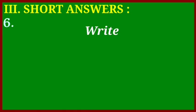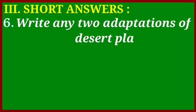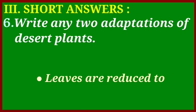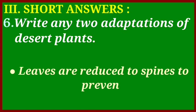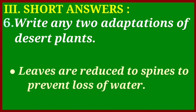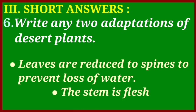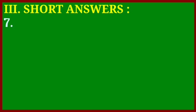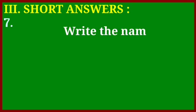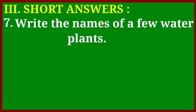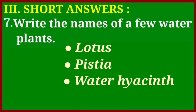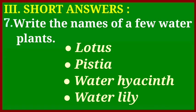Question number six: write any two adaptations of desert plants. Leaves are reduced to spines to prevent loss of water, and the stem is fleshy to store water and food. Question number seven: write the names of a few water plants — lotus, pistia, water hyacinth, and water lily.